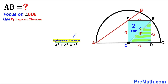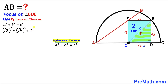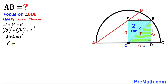Using the Pythagorean theorem a² + b² = c², with both legs equal to √2 and hypotenuse r: (√2)² + (√2)² = r², giving us 2 + 2 = r², so r² = 4. Taking the square root of both sides, our radius r turns out to be 2. The radius of this quarter circle is 2 centimeters.